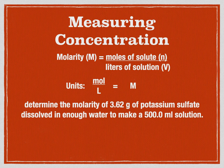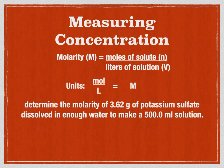Here's a question: determine the molarity of 3.62 grams of potassium sulfate dissolved in enough water to make a 500 milliliter solution. The first thing we're going to need to do is get our solute — potassium sulfate — from grams to moles. You'll need to find the chemical formula and calculate the molar mass. Set up a game board, put your 3.62 grams of potassium sulfate on the top left, and calculate the number of moles. Go ahead and pause the video while you do that.